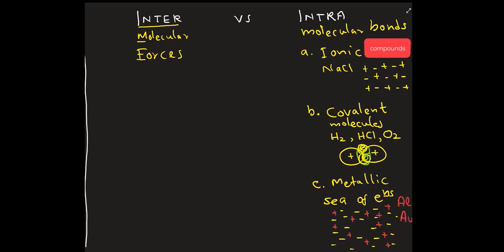So all these three, A, B, C, are actually intramolecular, inside a molecule, inside the matter. So these are stronger, hard to break, and they give completely different properties.